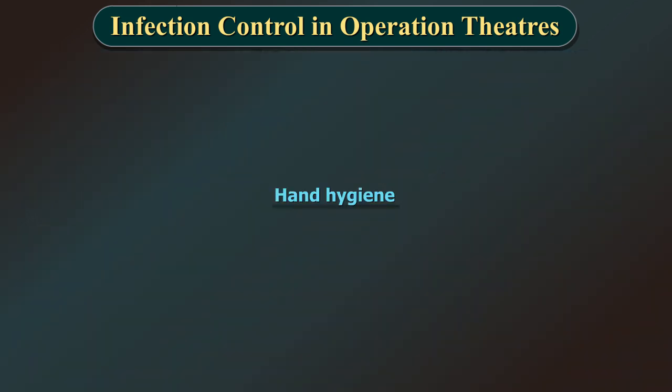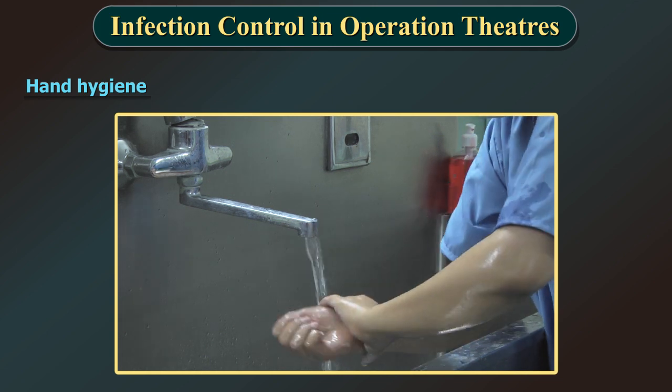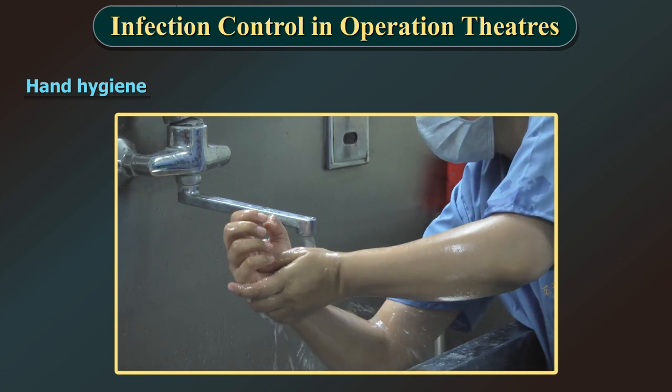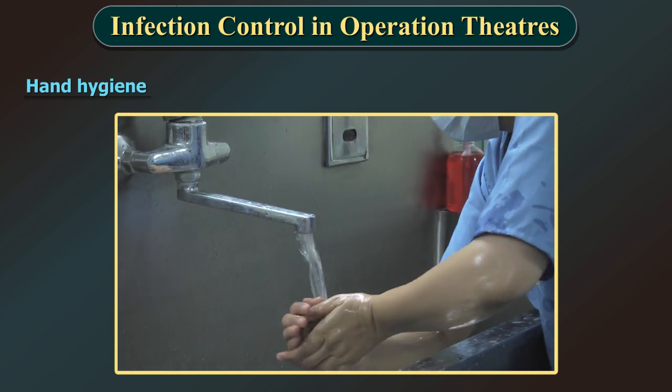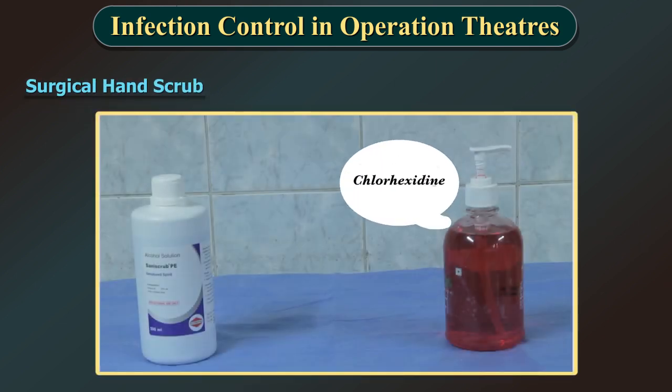In addition to general hand hygiene, surgical hand hygiene plays an important role in reducing SSIs. Surgical hand scrub can be done with medicated soap or surgical hand rub with alcohol-based formulations. Either method is suitable for the prevention of surgical site infection.